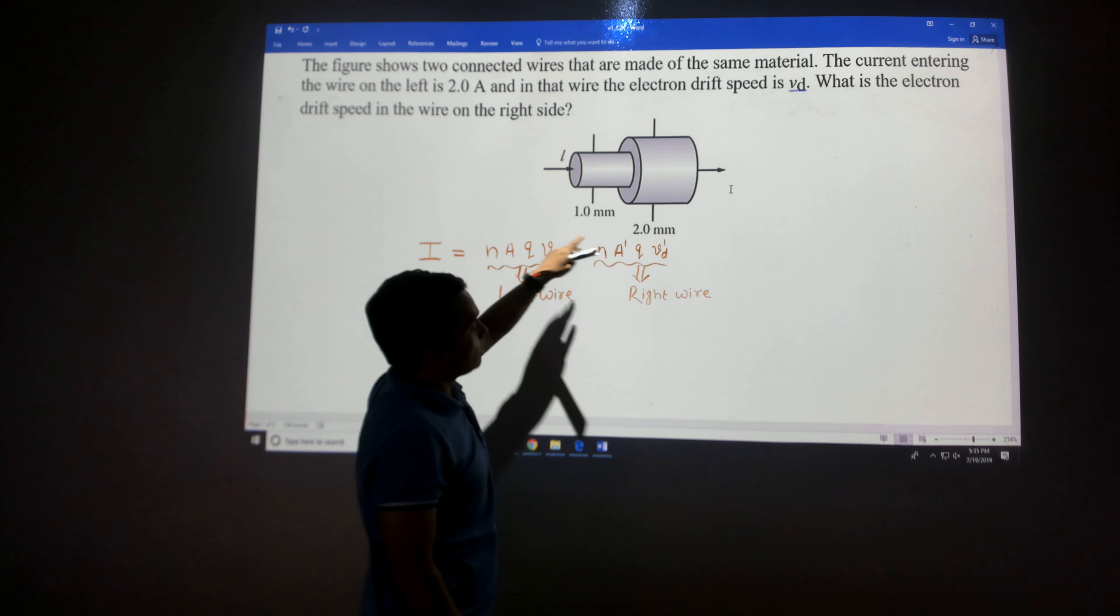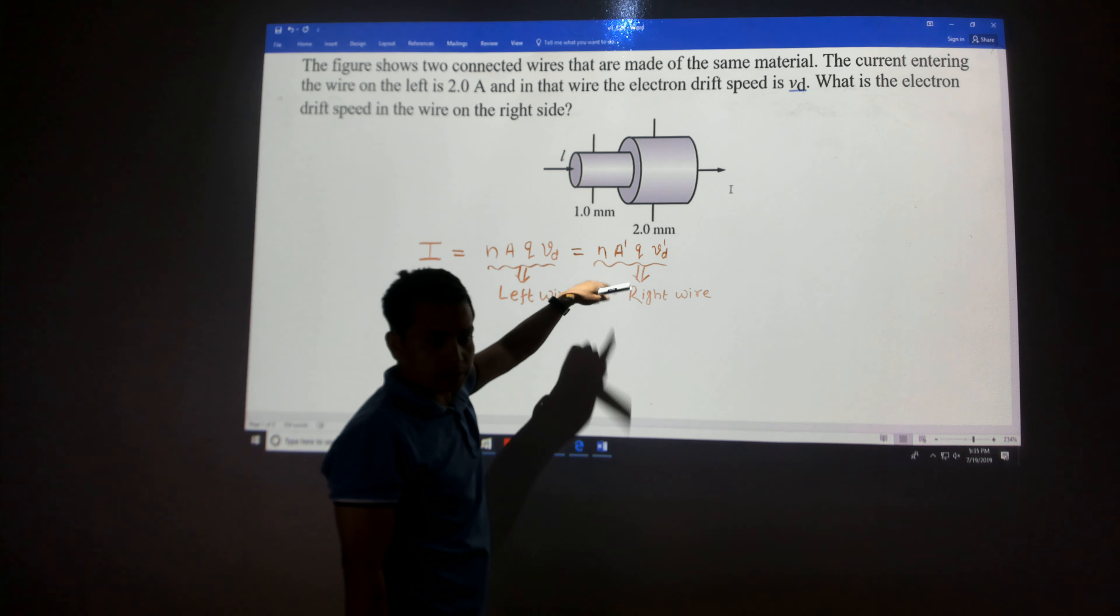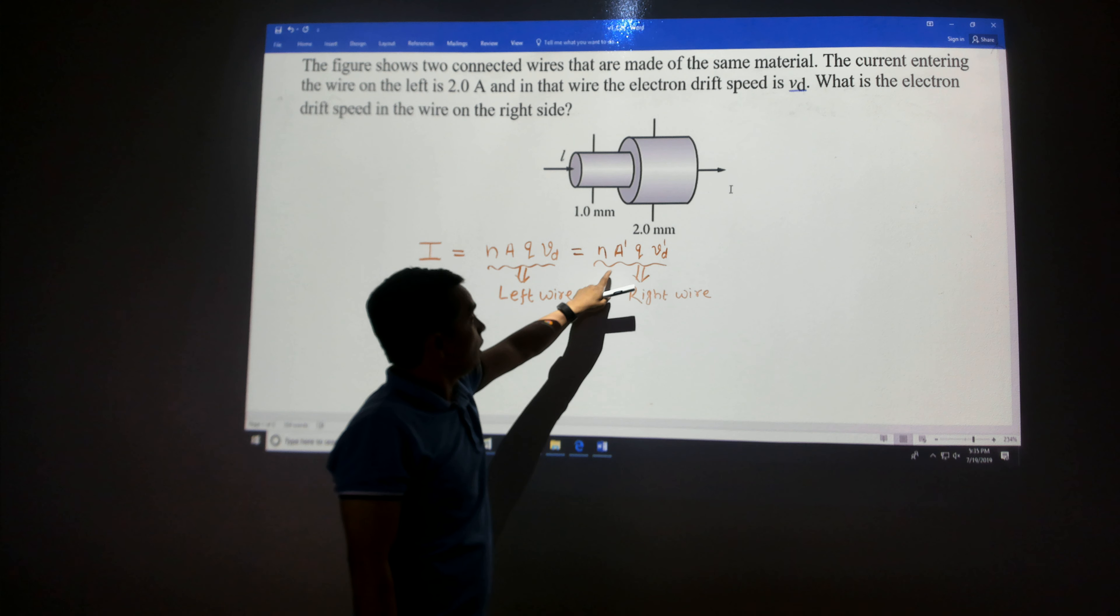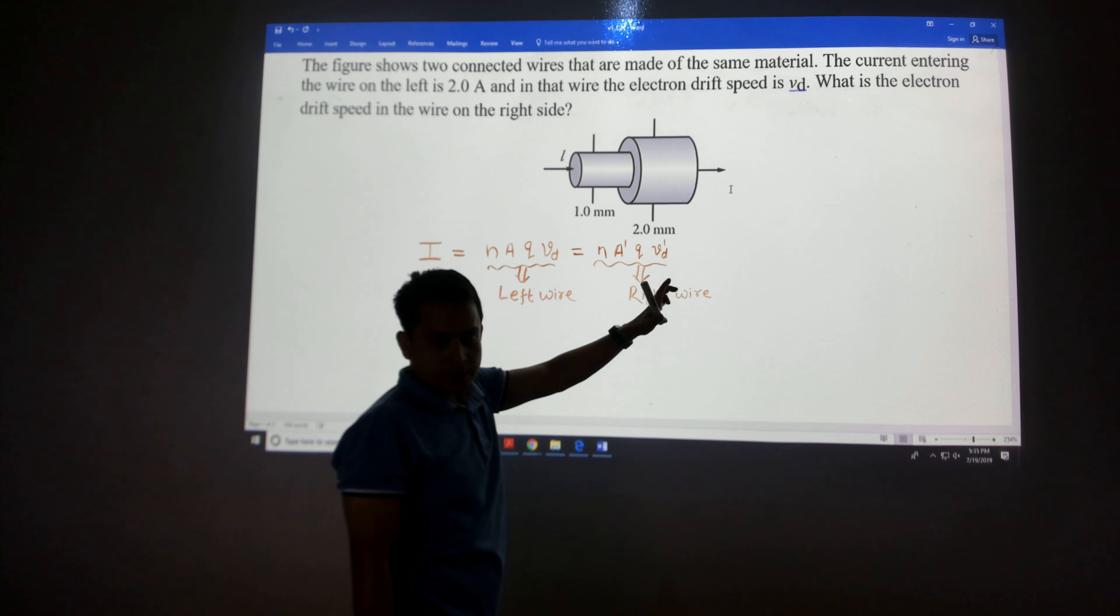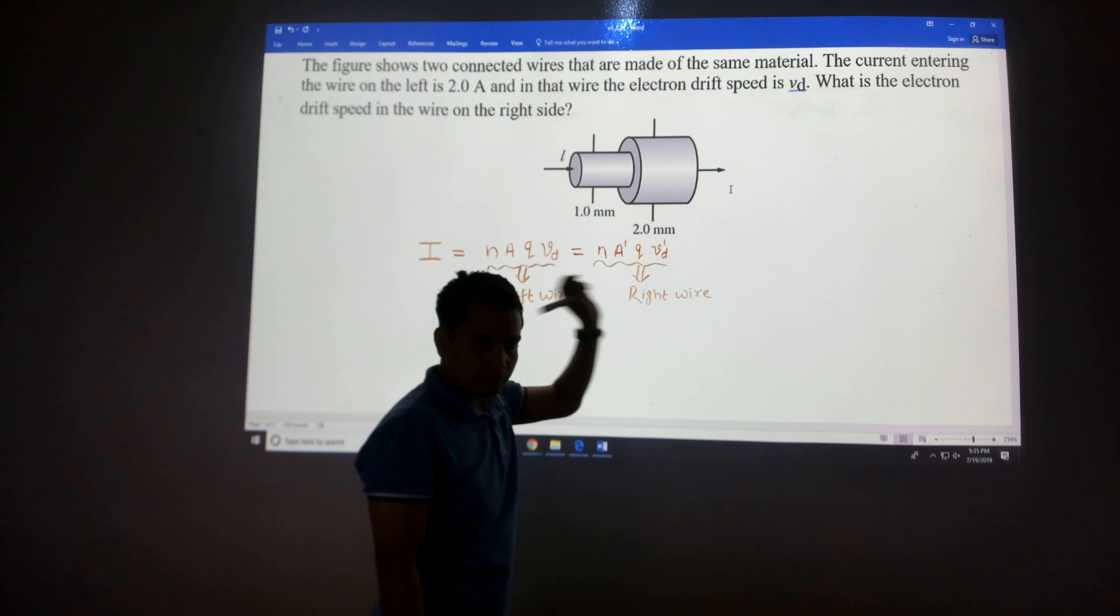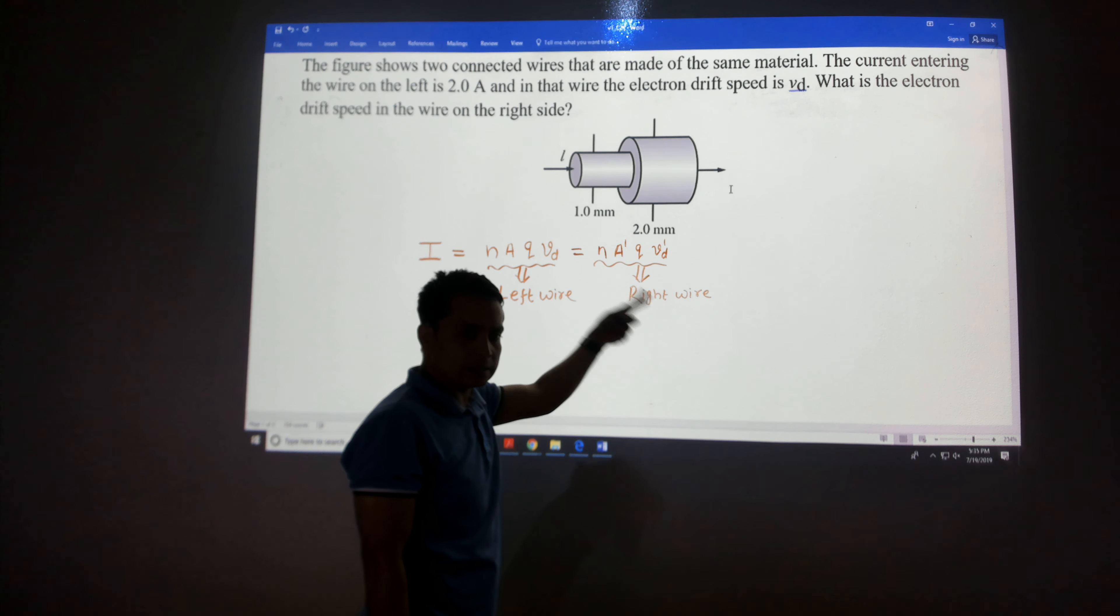As these two are made of the same material, N would be the same because this is material dependent. Q is the charge carrier, and the same electron is flowing, so the charge carrier in both cases is the same.